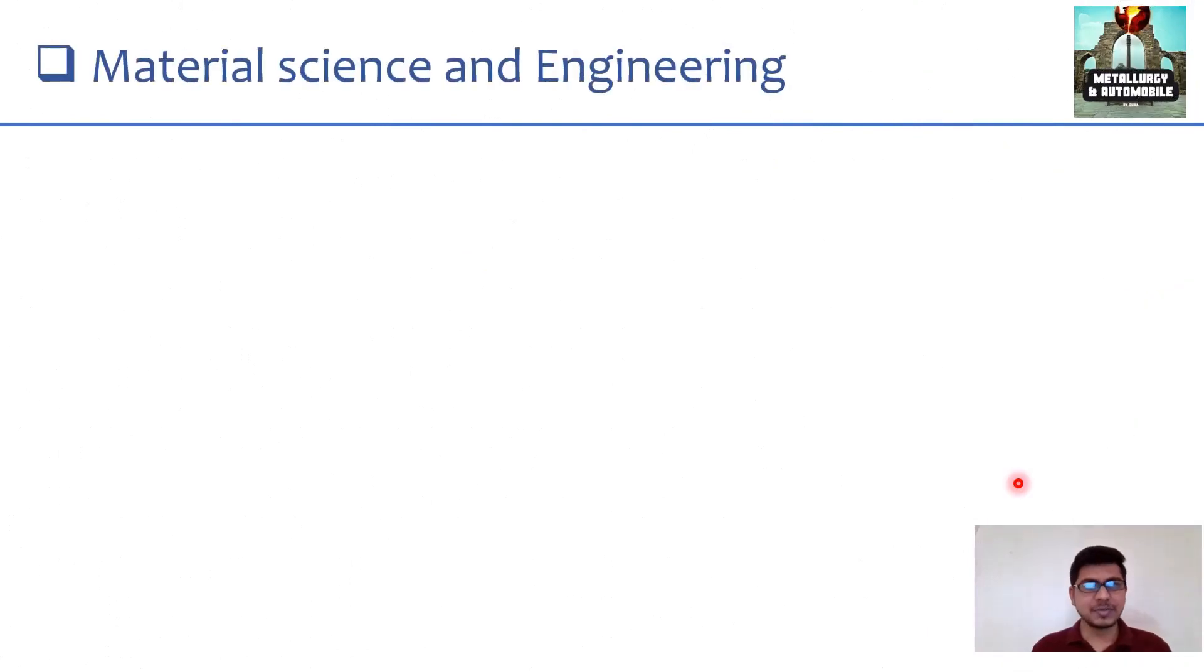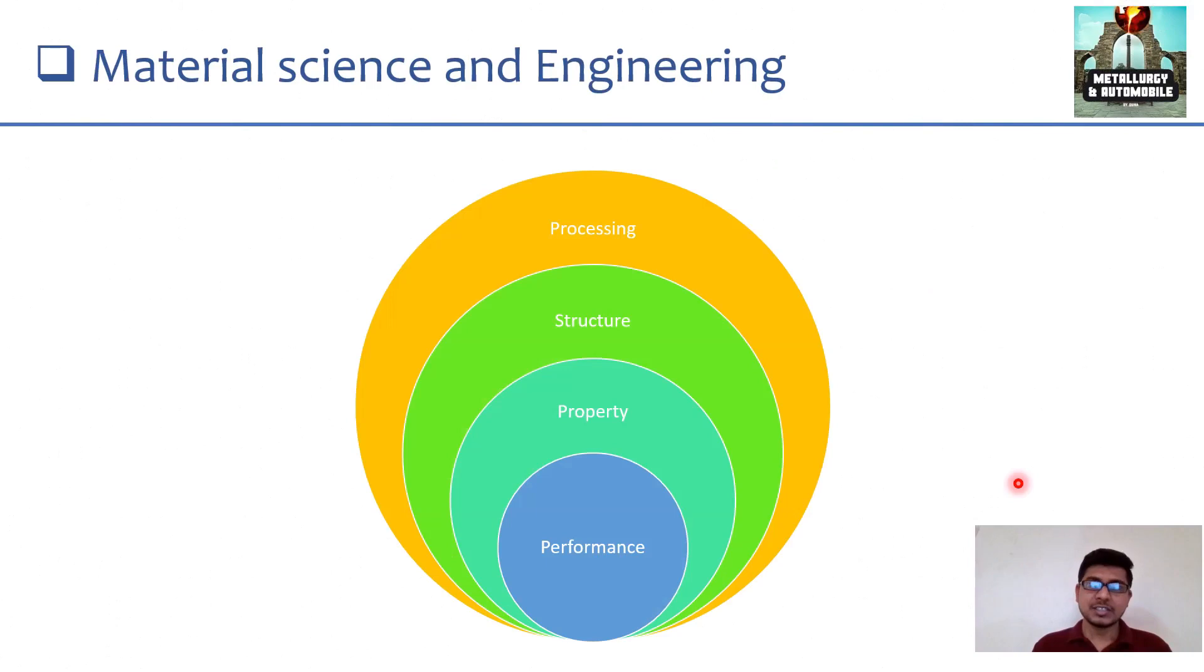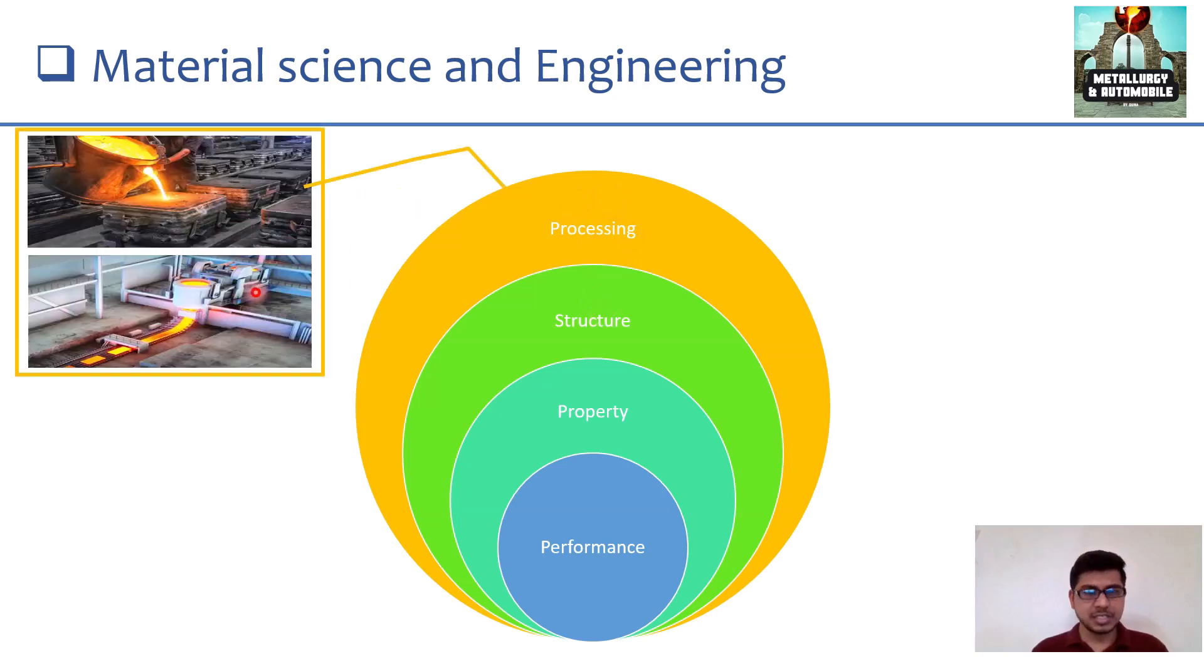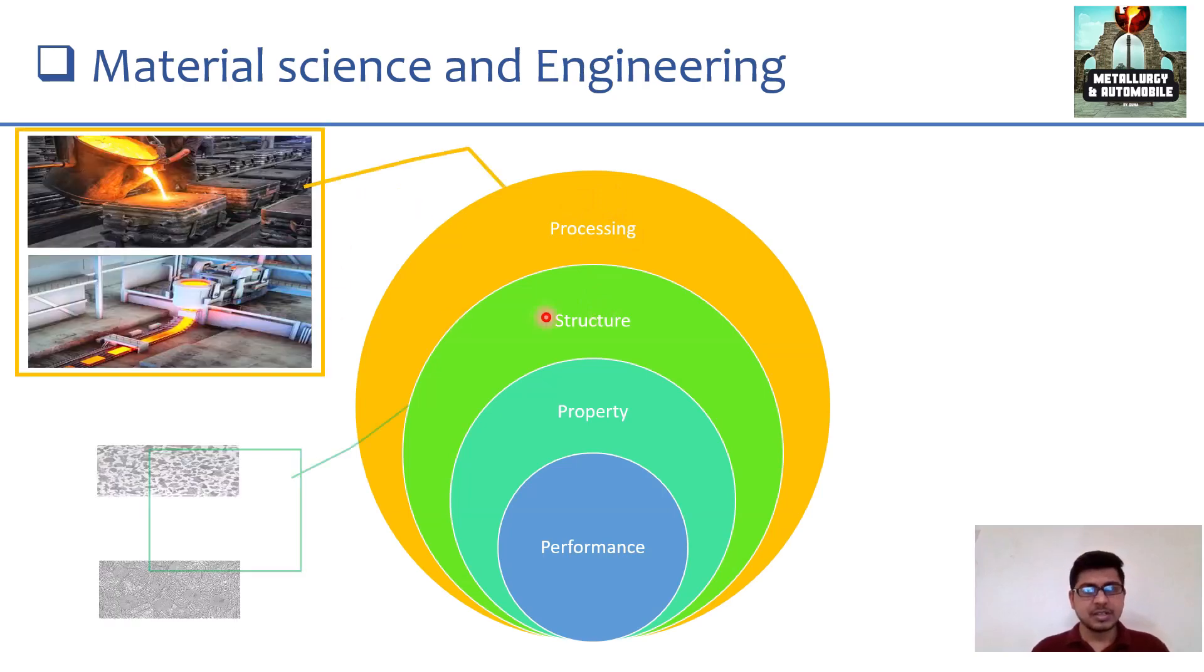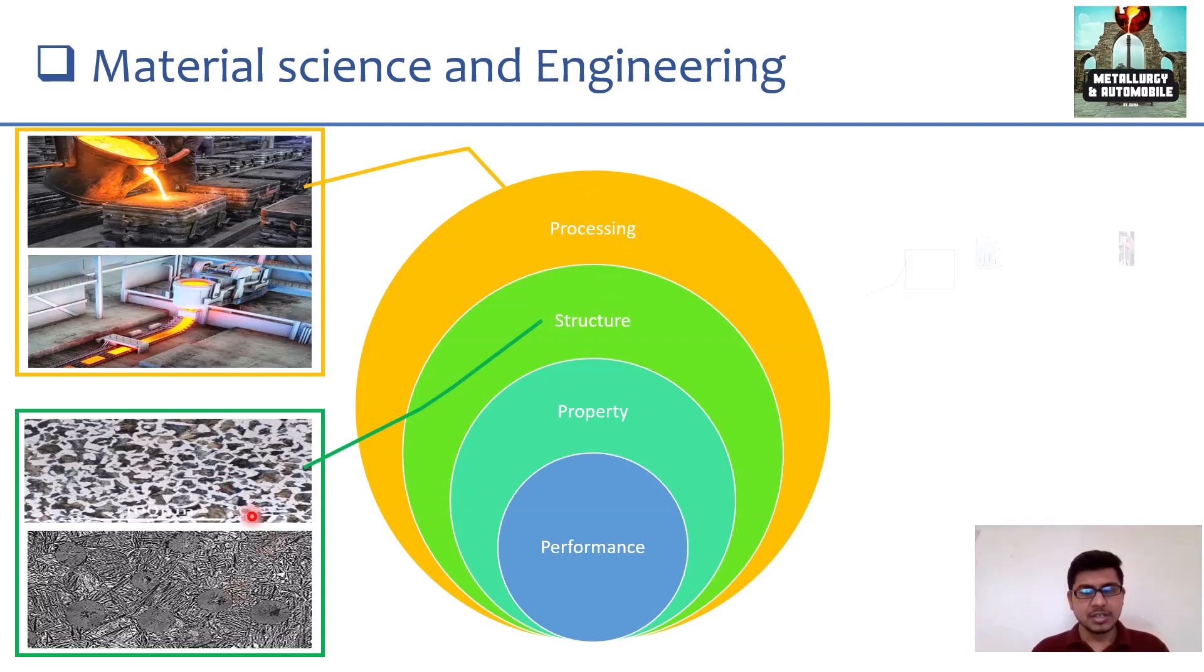We will go to next thing, that is material science and engineering. Some basic metallurgical cycle we will see. As I told you earlier, structure and property of the material is very interlinked and the property of the material depends on the structure. As you see here, it depends on the processing. Based on the processing, structure will depend. Based on the structure, its property will depend.